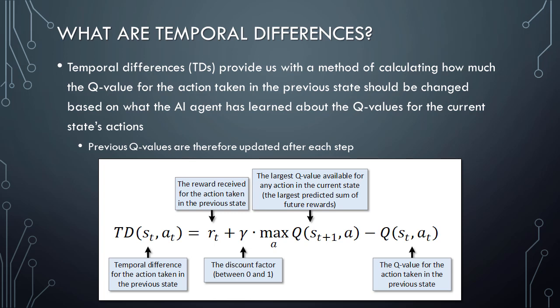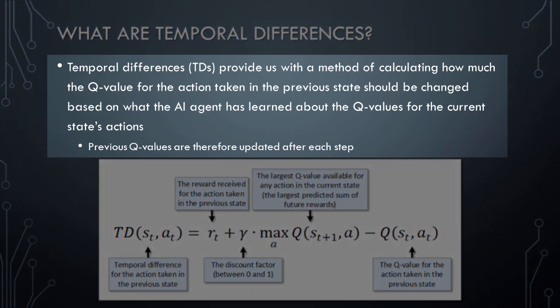Next, let's talk about temporal differences. In Q-Learning, temporal differences, or TDs, provide us with a method of calculating how much the Q value for the action taken in the previous state should be changed based on what the AI agent has learned about the Q values for the current state's actions. This means that in the Q-Learning process, we will always update the Q value for the most recent action with what we have learned about our new state. Thus, if the new state is promising — that is, if it provides us with a relatively good reward — then the Q value for the previous action will be increased. The AI agent will then be able to rely on this knowledge to help it make decisions during the next training episode.